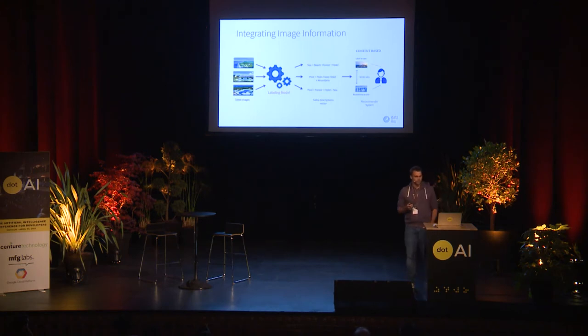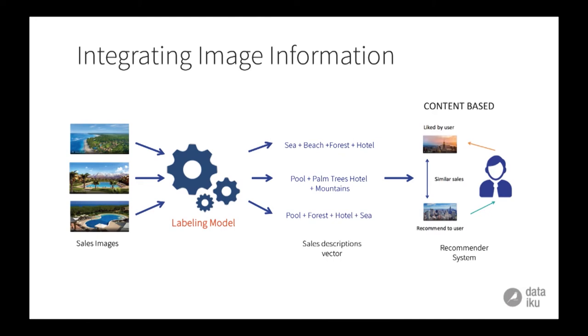If we have a model — for example through deep learning — that enables us to label images, we would be able to have, for the first image, something like: there is a sea, there is a beach, there is a forest, there is a hotel. If I take this whole set of tags, I can create for each image one vector of boolean values — one if the tag is present, zero elsewhere. With these different vectors I can calculate a similarity between different images, and therefore a similarity between different sales. I can then use that in a content-based recommendation engine, which in turn feeds my meta-model for the recommendation system.